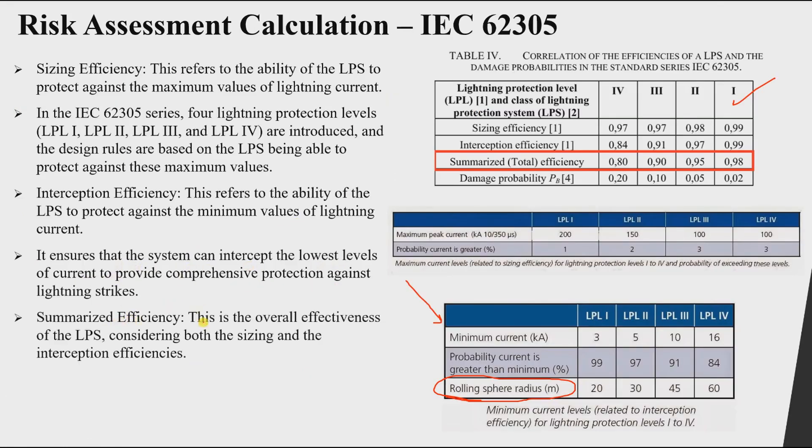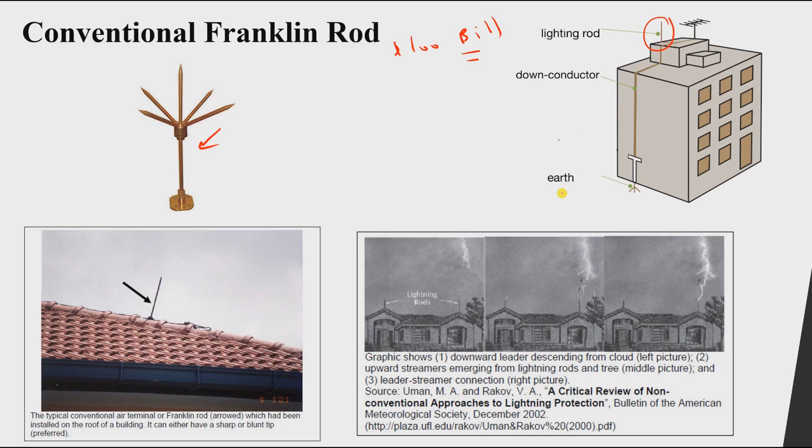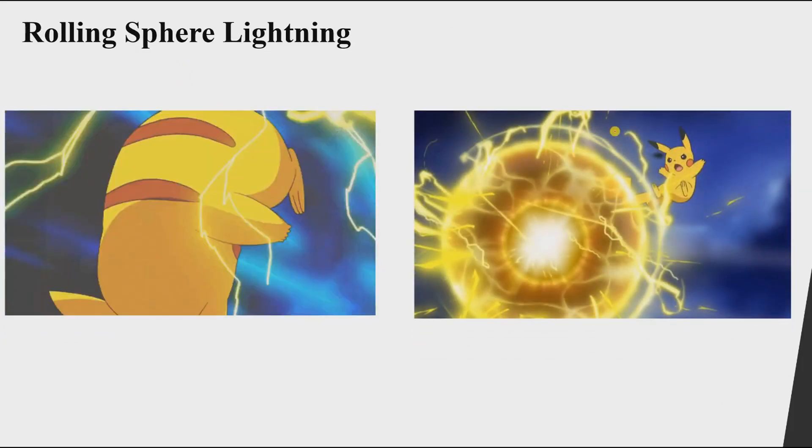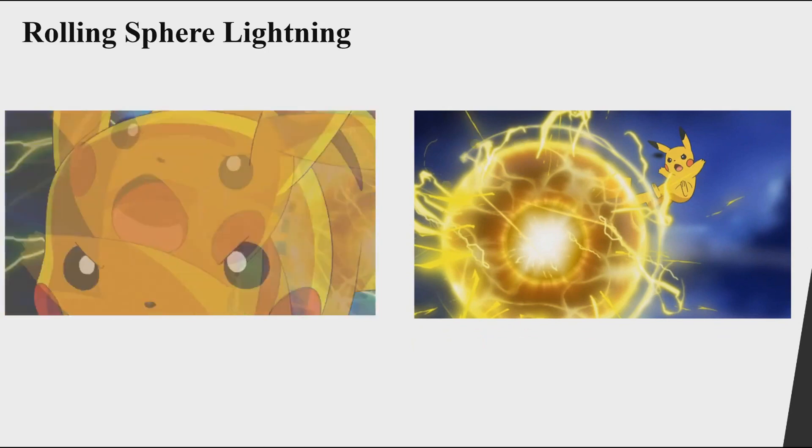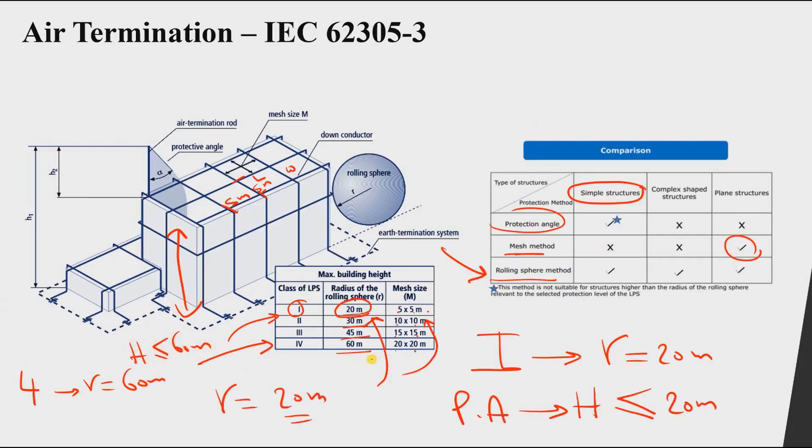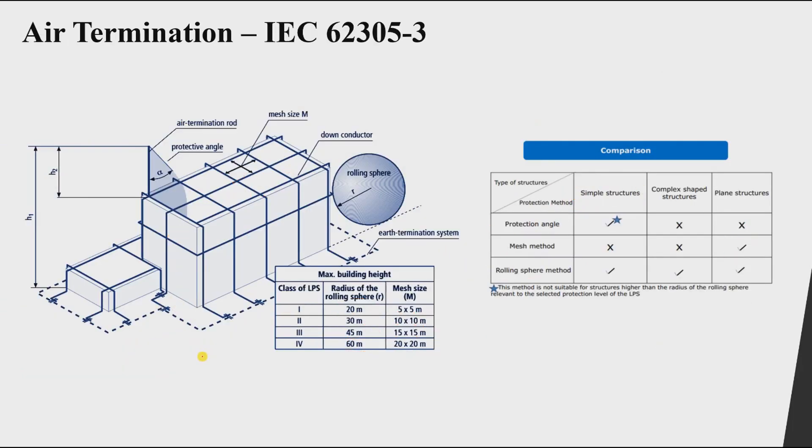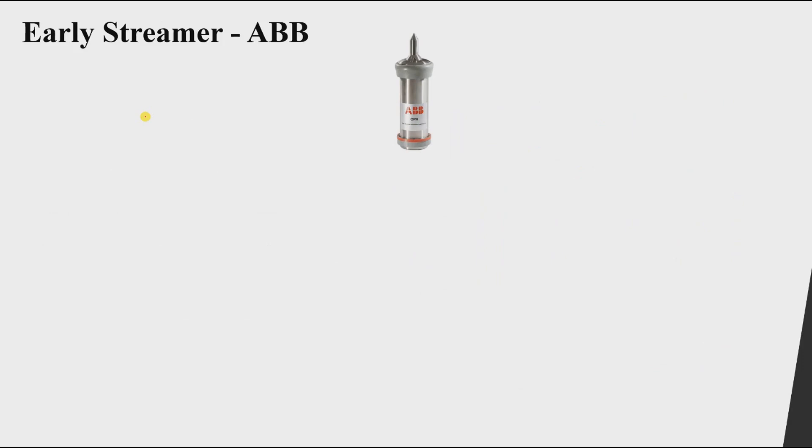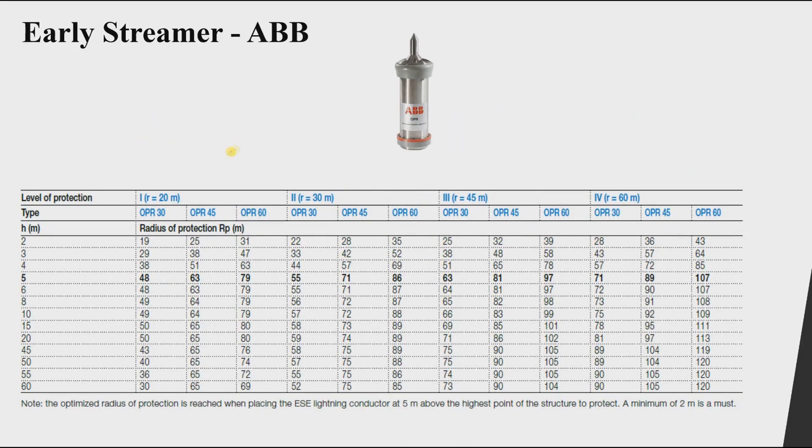In the next section of the course, we will learn about the air termination methods at which we are going to capture the lightning strike. In order to capture it, we need vertical air termination system or horizontal air termination systems. So we have different methods that include the rolling sphere method, the mesh grid method, and the protective angle method.